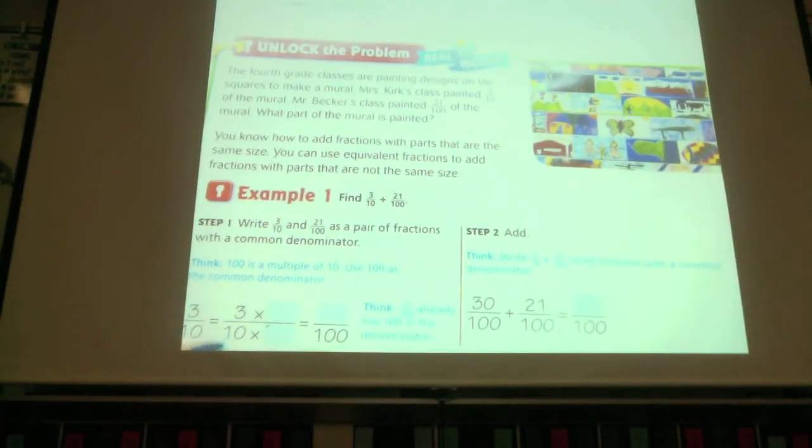The fourth grade classes are painting designs on the squares to make a mural. Miss Kirk's class painted three-tenths of the mural. Mr. Becker's class painted twenty-one-hundredths of the mural. What part of the mural is painted? Okay, now we know how to add fractions, don't we? Yes.